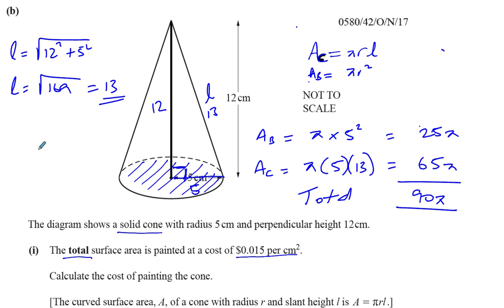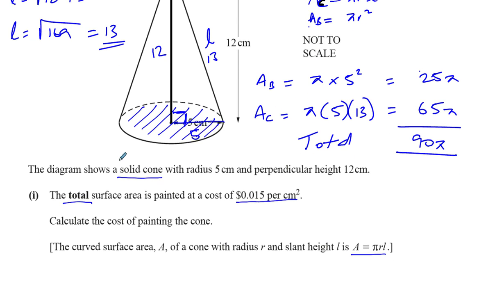That's not our answer. They didn't ask us to find the surface area as our final answer. They asked us to find the cost of painting the cone. We know the cost for 1 centimeter squared. This is going to be in centimeters squared because all the units we used were centimeters. The cost of painting the cone is going to be the cost for 1 centimeter squared times the number of centimeters squared.